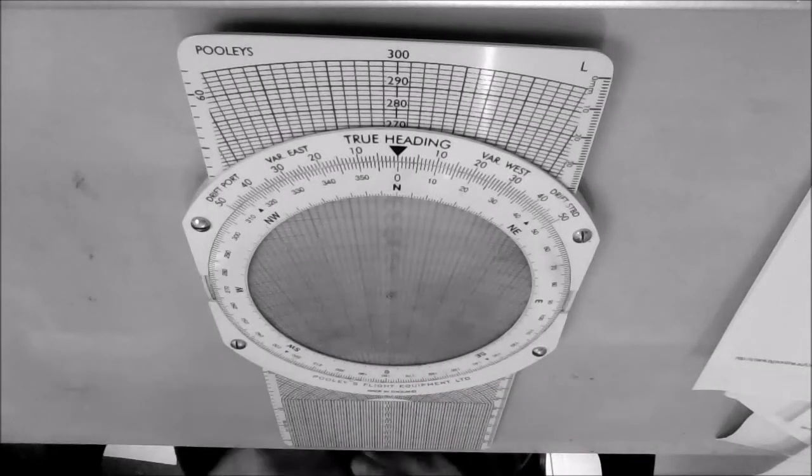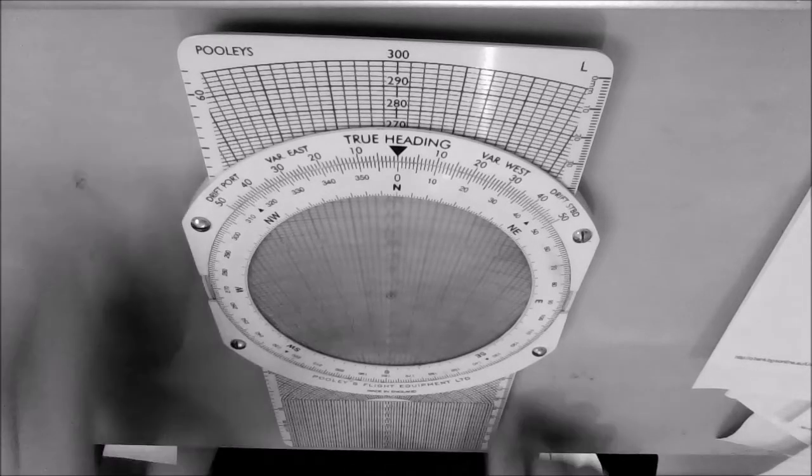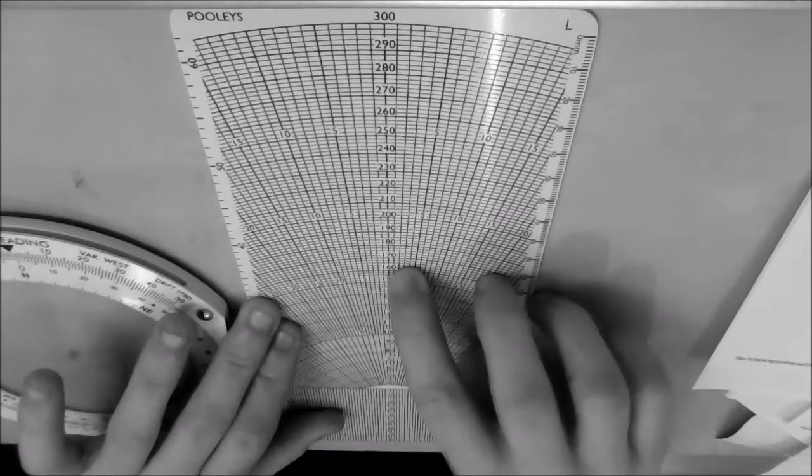Okay, so the first thing we're going to do is get our CRP5, obviously on the wind side. We know that our TAS is 160, which fits on the low speed scale of the CRP5.